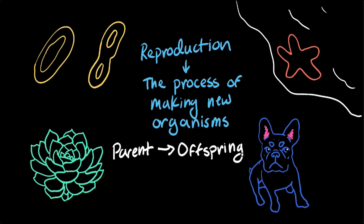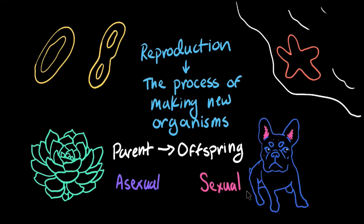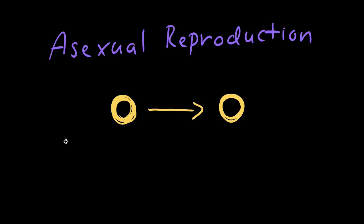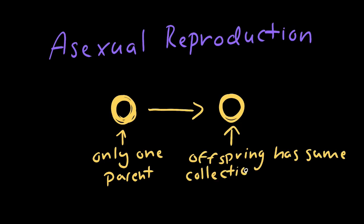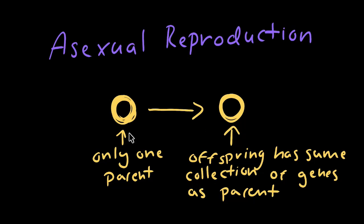There are two main ways organisms on Earth reproduce: asexual reproduction and sexual reproduction. Let's start off by breaking down asexual reproduction first. In asexual reproduction, only one parent is involved in producing offspring. Due to this, the offspring will inherit all of their genes from that single parent, meaning asexual reproduction produces offspring that are genetically identical to their parent — they have the same collection of genes. Various kinds of microorganisms, plants, and even animals are able to reproduce asexually.